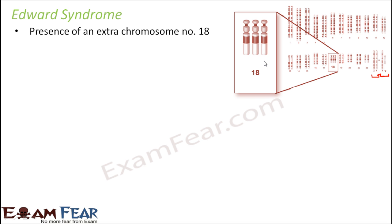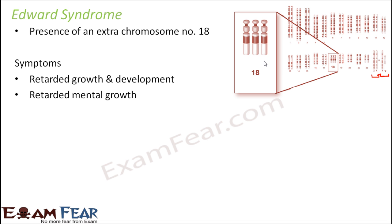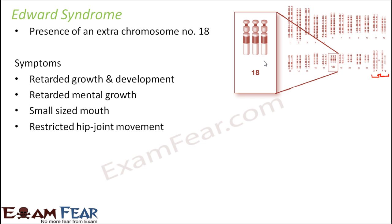Edwards syndrome is more commonly seen in females, and most affected babies do not survive for more than a few months. Symptoms include retarded growth and development and retarded mental growth — both physically and mentally the growth doesn't happen properly — as well as small sized mouth. The development is so retarded that the child doesn't survive for more than a few months. Restricted hip joint movement is also observed.